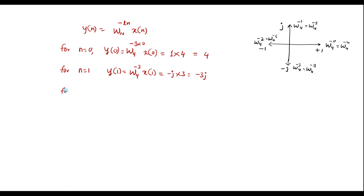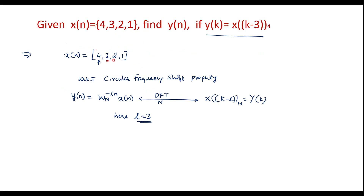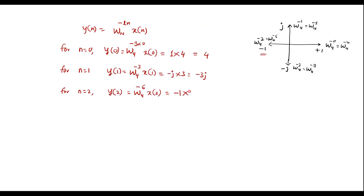Similarly, for n equal to 2, y of 2 is equal to W_4 to the power minus 3 times 2, which is W_4 to the power minus 6. From the twiddle factor table, W_4 to the power minus 6 is -1. So y of 2 equals -1 times x of 2. Since x of 2 is 2, y of 2 equals minus 2.